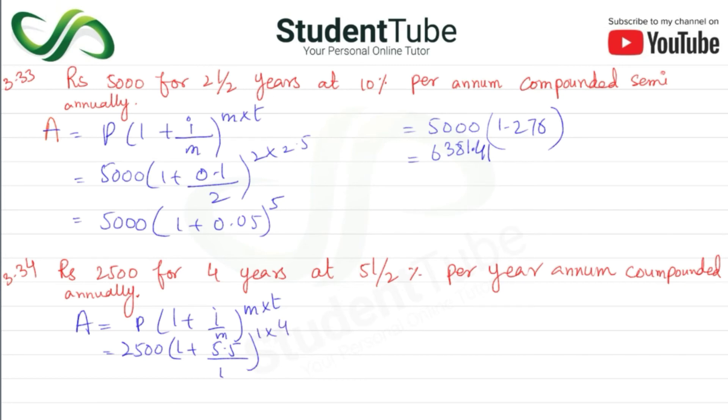So here this is 2500, 1 plus when we divide this by 1, there's 1 below. When denominator is 1 it has no value, so it's 0.055. This is 0.055 and 1 times 4 is 4. When we add this and calculate the exponent, this becomes 1.239.